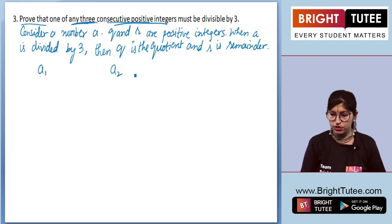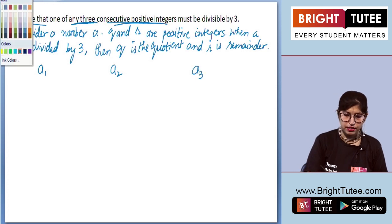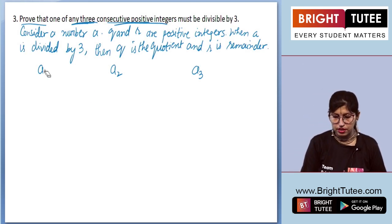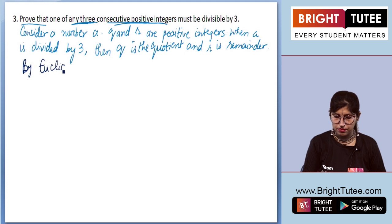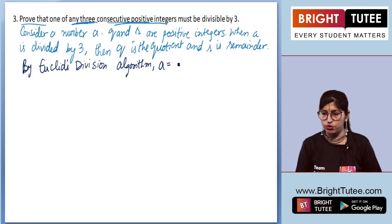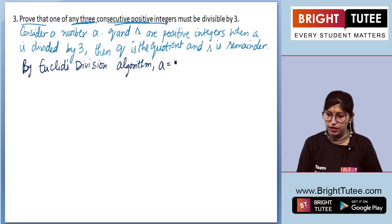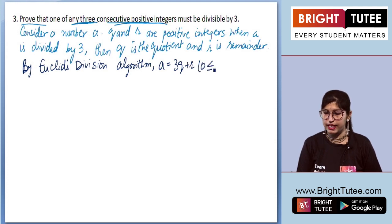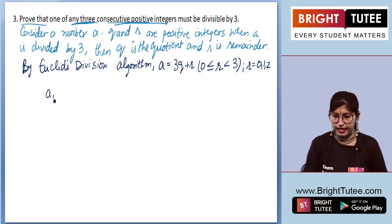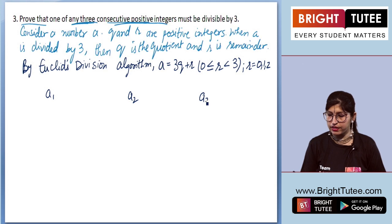We will have three consecutive integers: the first one is a1, the second one is a2, and the third one is a3. By Euclid's division algorithm, we get a equals bq plus r, which means a equals 3q plus r, where 0 is less than or equal to r and r is less than 3. So r will be 0, 1, or 2.